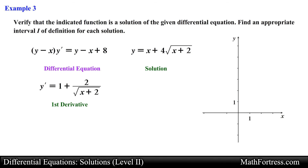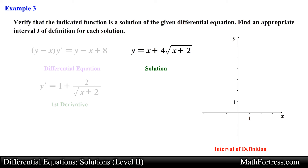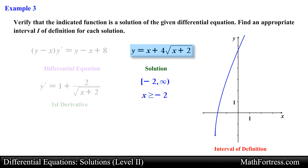Next let's determine an appropriate interval of definition. Notice that the domain of the solution must be the interval [-2, +∞), since x must be greater than or equal to -2 — we don't want to take the square root of negative numbers, which would produce imaginary numbers. At first glance it seems like this interval would be appropriate. Unfortunately this is not an appropriate interval.